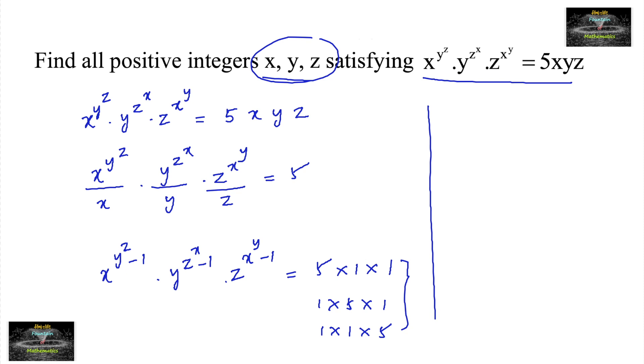Now suppose if x to the power of y to the power of z minus 1 is equal to 5. Let us consider. So this is 5 to the power of 1, so y to the power of z minus 1 is equal to 1, which implies when x is equal to 5, and y to the power of z is equal to 1 plus 1, which is 2. So that is 2 to the power of 1 which implies y is equal to 2 and z is equal to 1 since xyz are integers. So this is one possibility we are getting: 5, 2, 1.